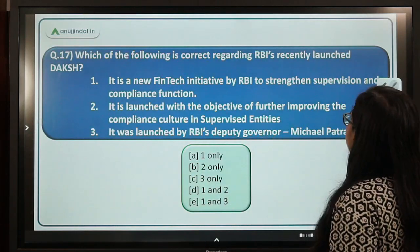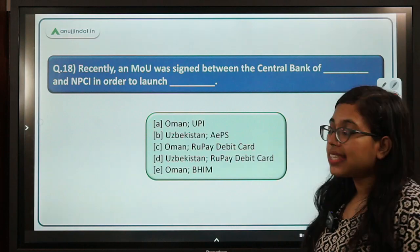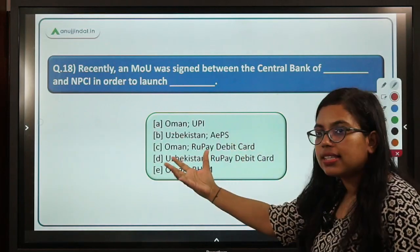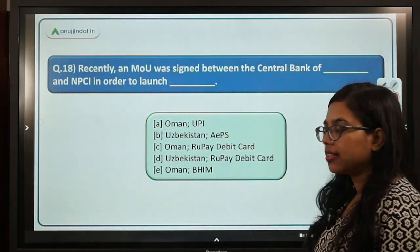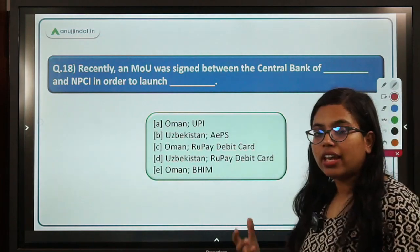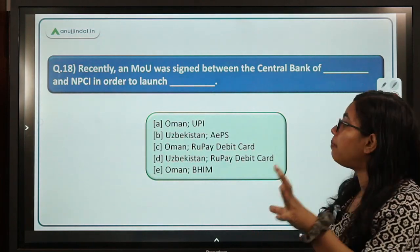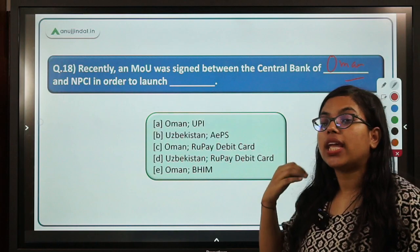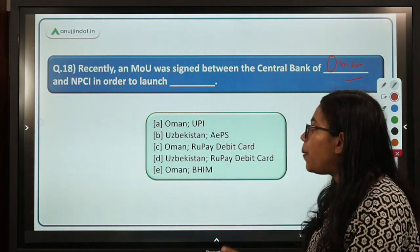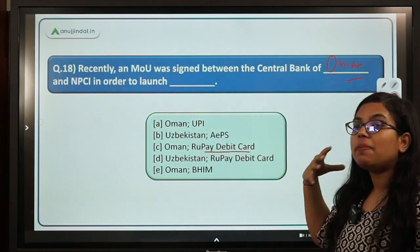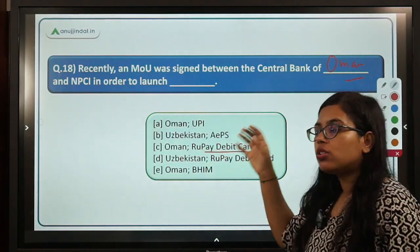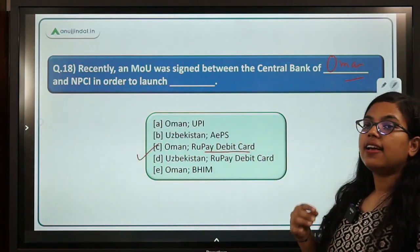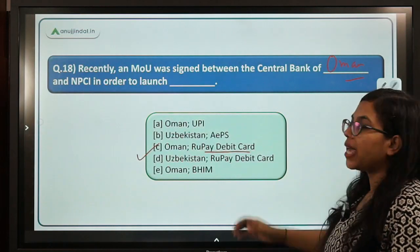Question 18 asks: recently an MOU was signed between the central bank of one country and NPCI in order to launch which product? The central bank of Oman has signed an MOU with NPCI in order to launch RuPay debit cards. RuPay debit cards will be used in Oman. The correct answer is C.